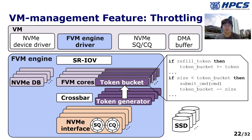To evaluate FVM's flexibility, we implemented five example storage functions in FVM's hardware virtualization layer. This slide illustrates the throttling feature. We implemented a token-based throttling algorithm on FVM engine, which can limit the bandwidth using periodically-refilled tokens and a token bucket in every FVM core. Each FVM core polls the refill token signal and filters every command by checking the size of the request and the amount of remaining tokens. If the command is issued, the corresponding amount of tokens are removed from the bucket.